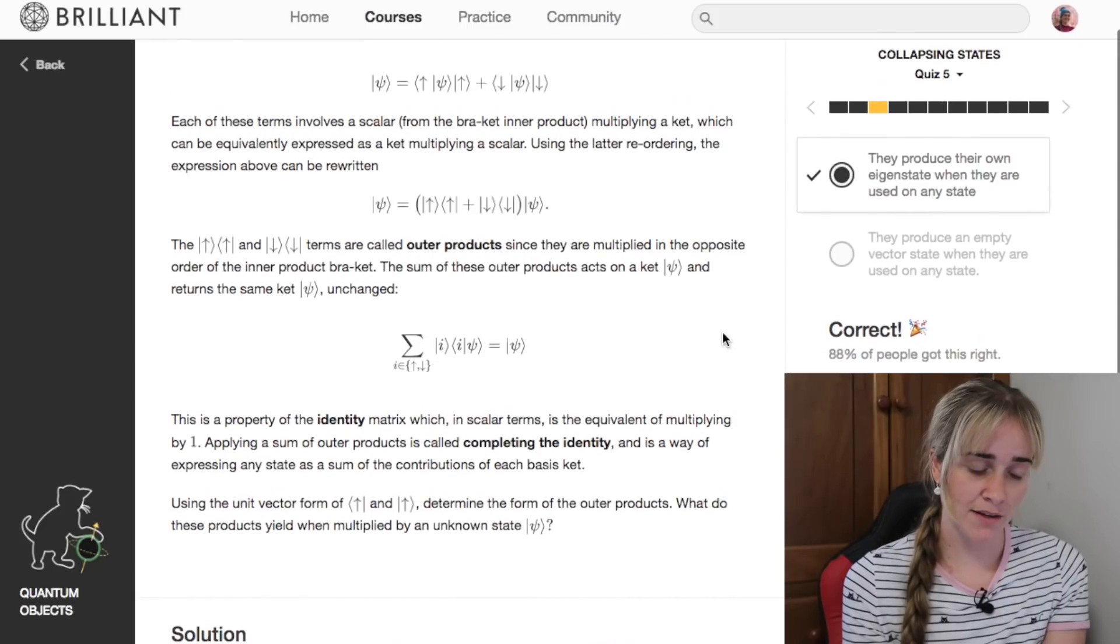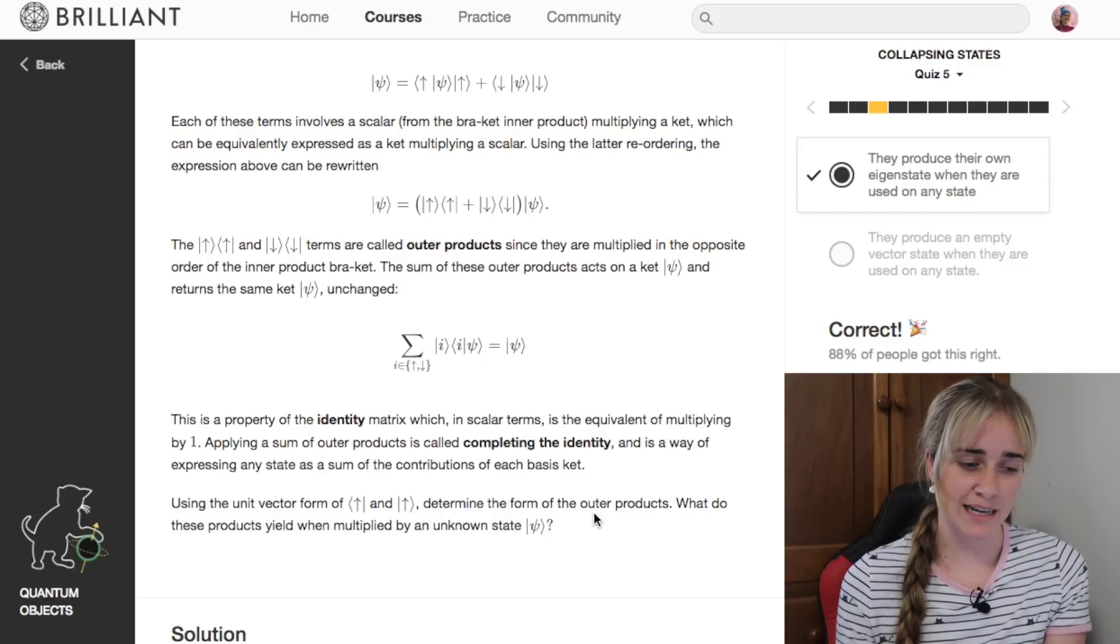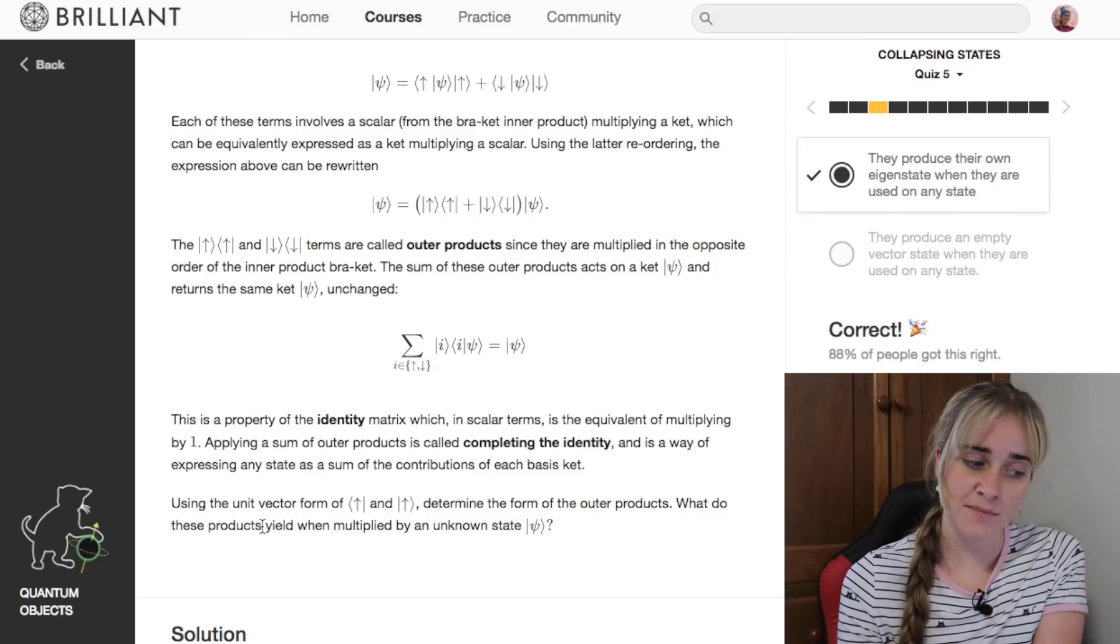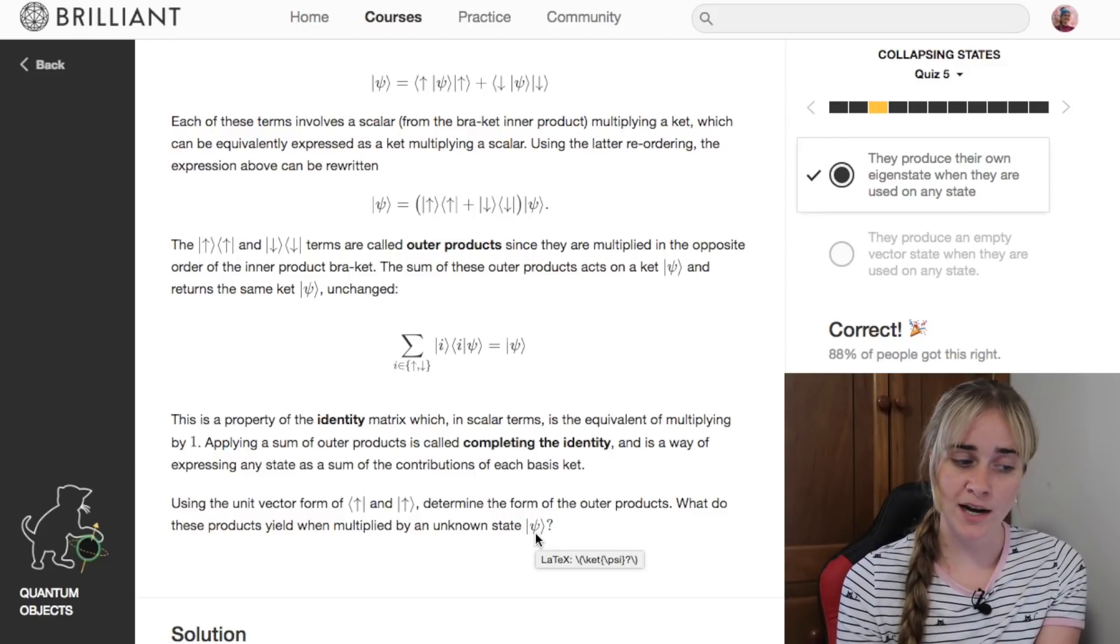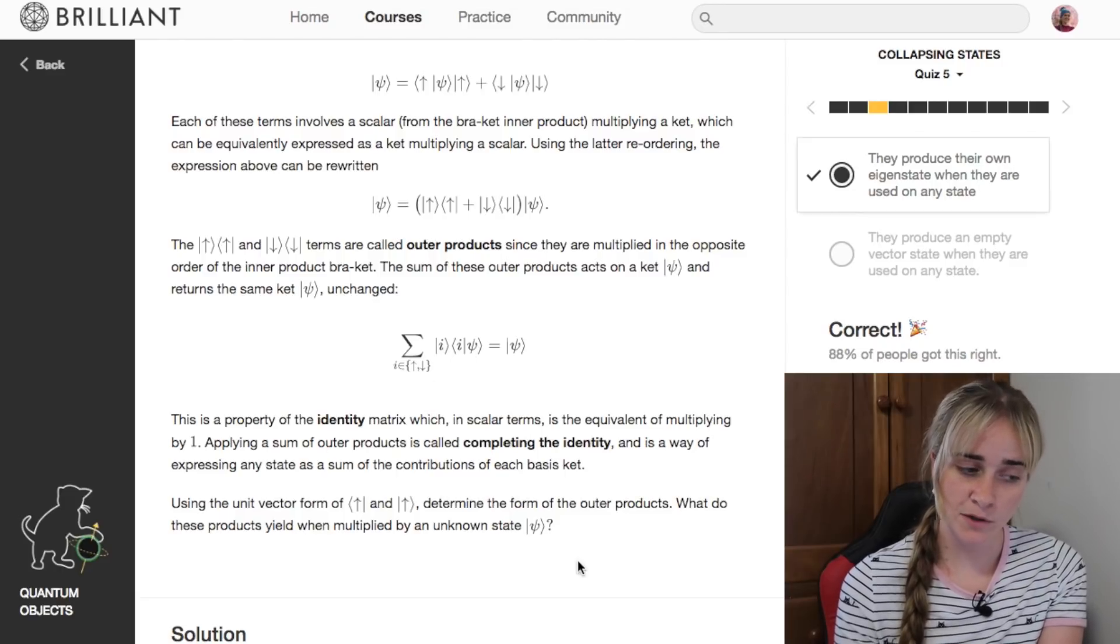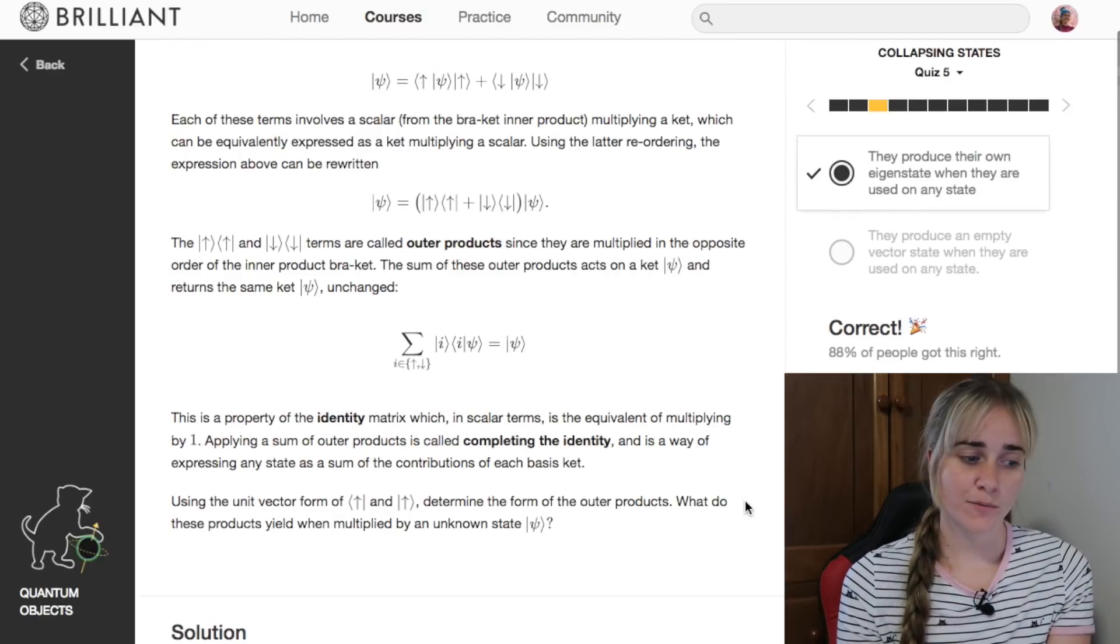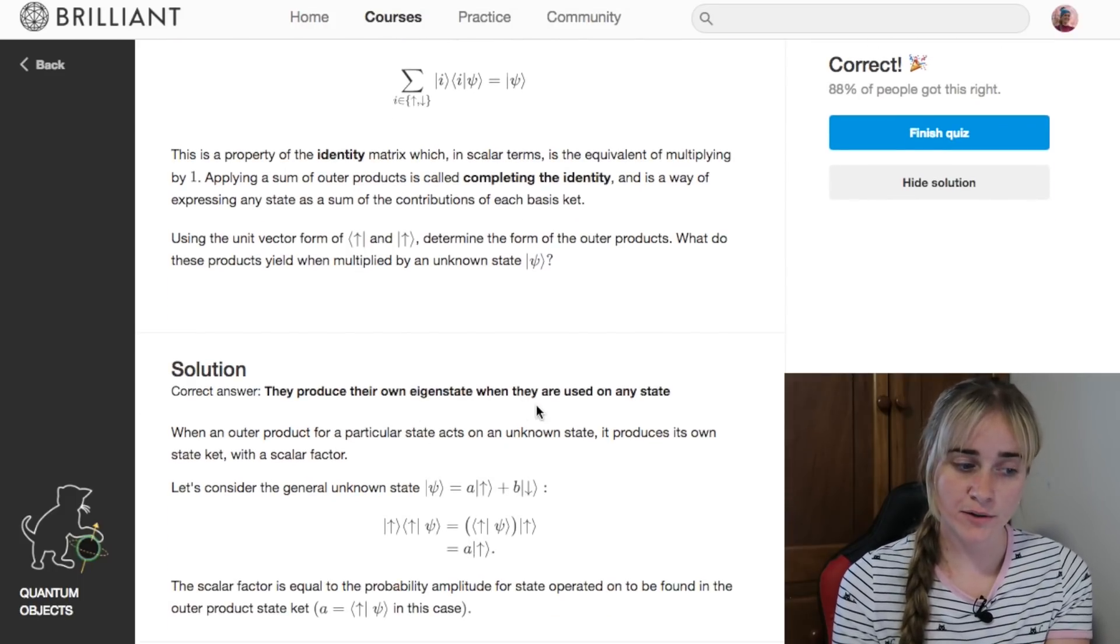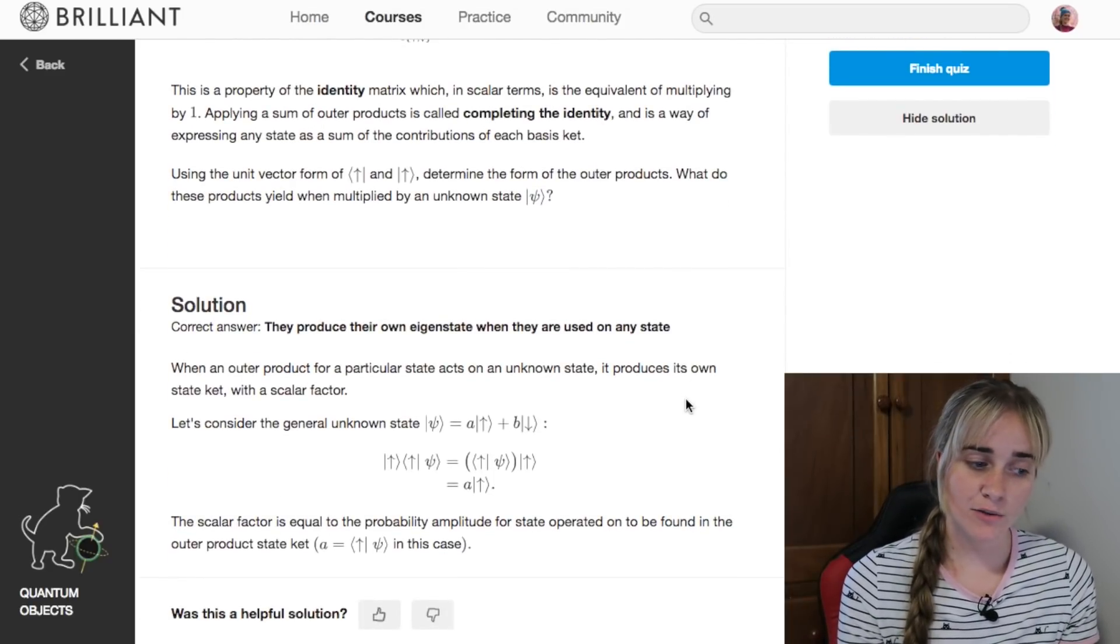We have a question here basically about determining the form of an outer product: what actually is this outer product? What do these products yield when multiplied by an unknown state psi? Well what happens is they produce their own eigenstate when they are used on any state. Now I don't think we've spoken about what an eigenstate is, but we can have a look at it here.